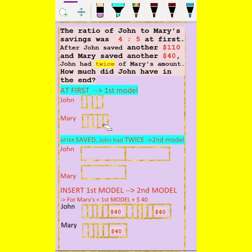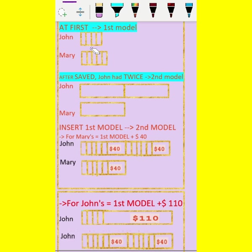From the first model, Mary has 5 units, so 5 units plus $40 is inserted into the second model here, and John is double of this. Referring to the first model, after saving, John has 4 units plus $110. And referring to the second model, after saving, John is represented by this bar.